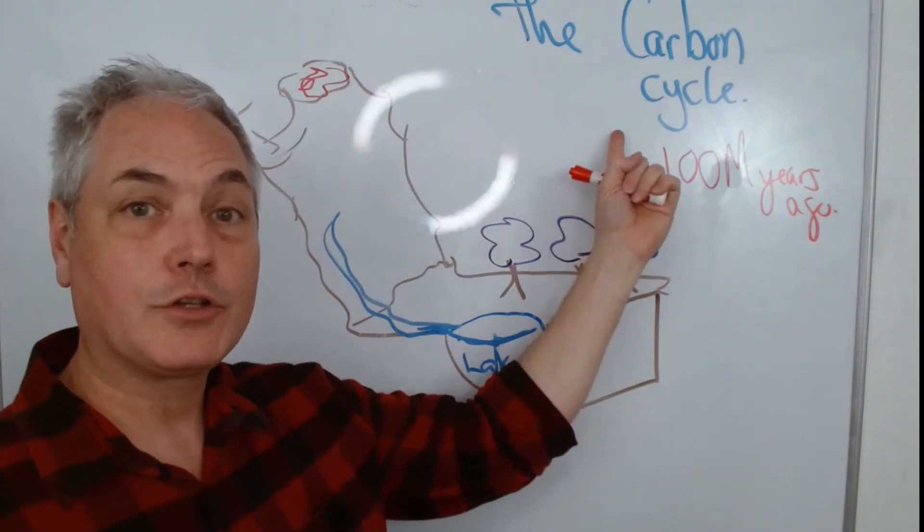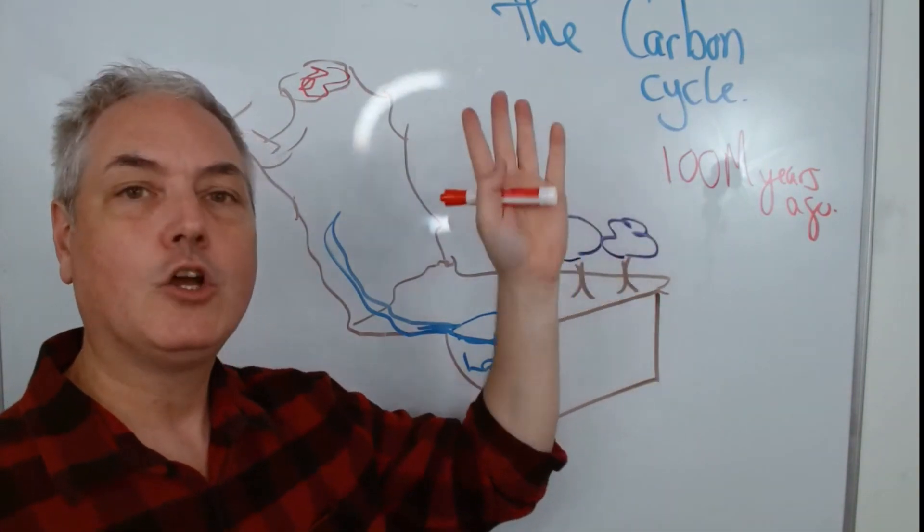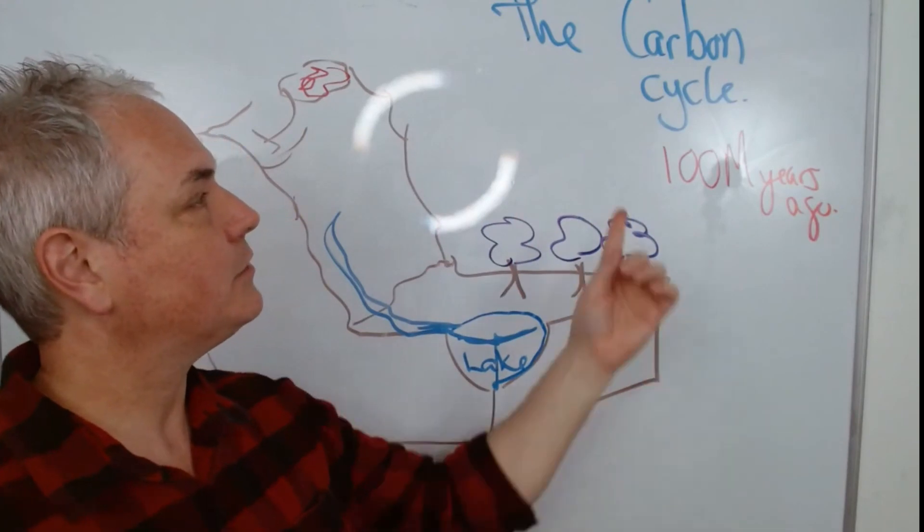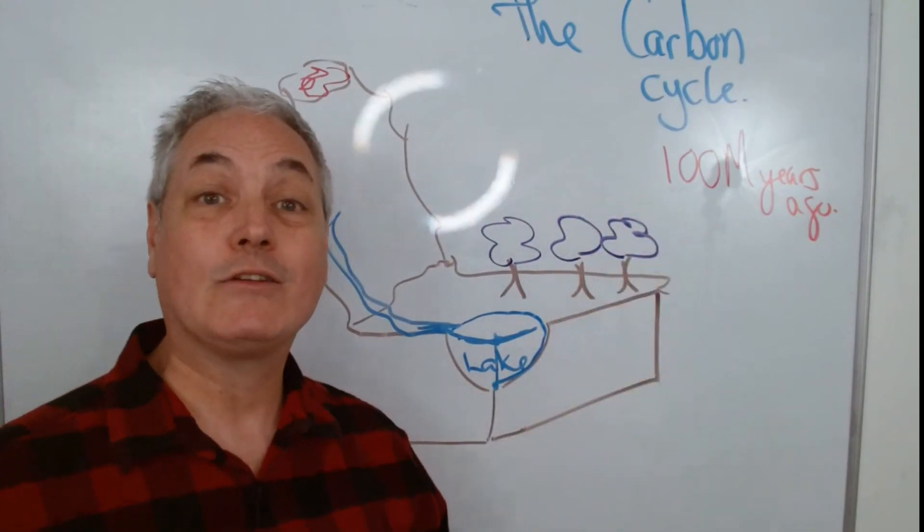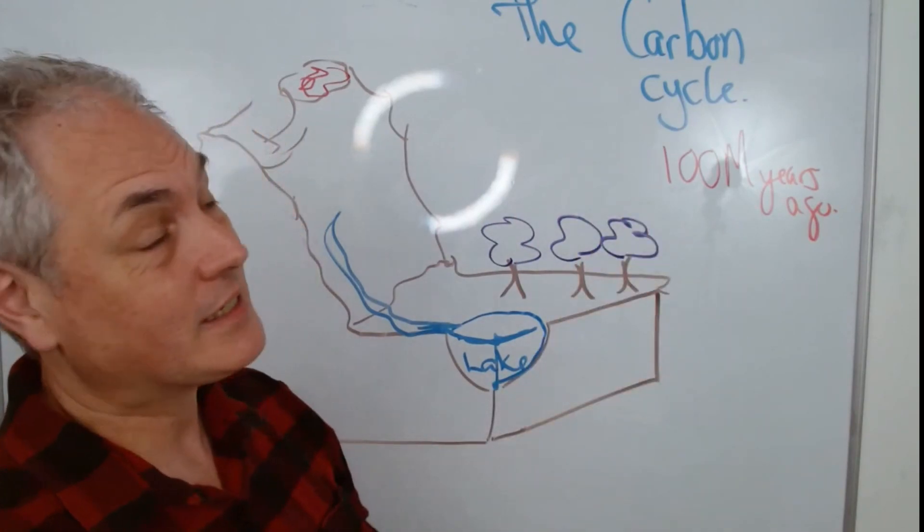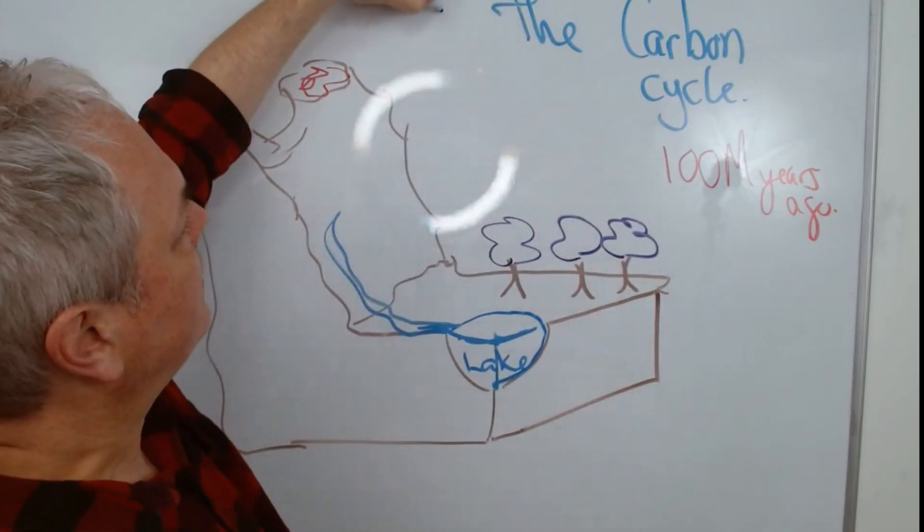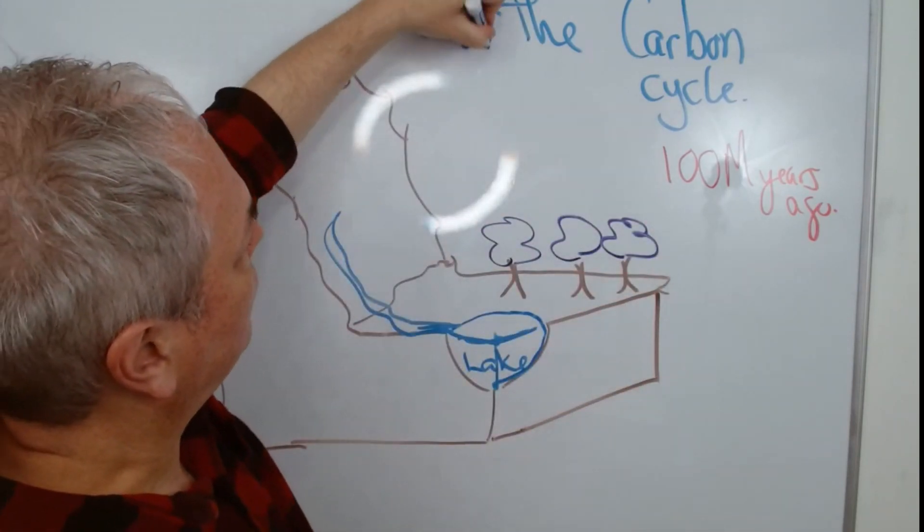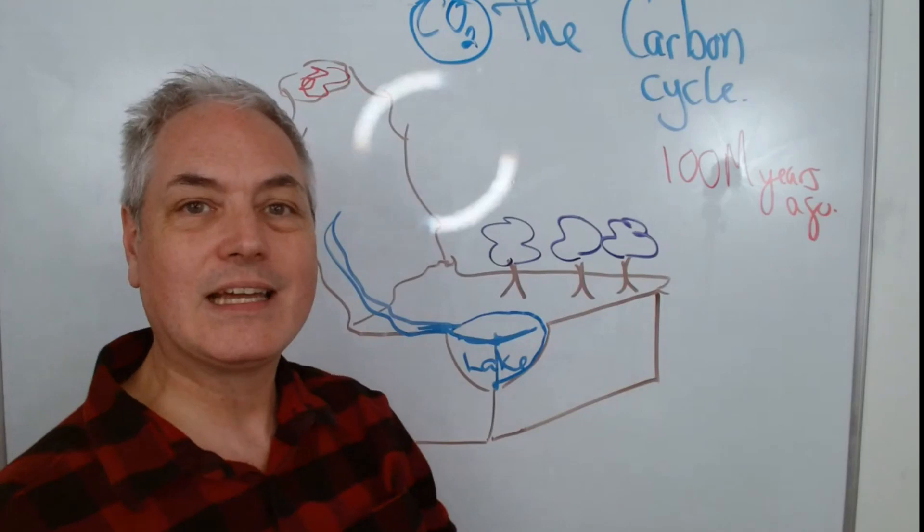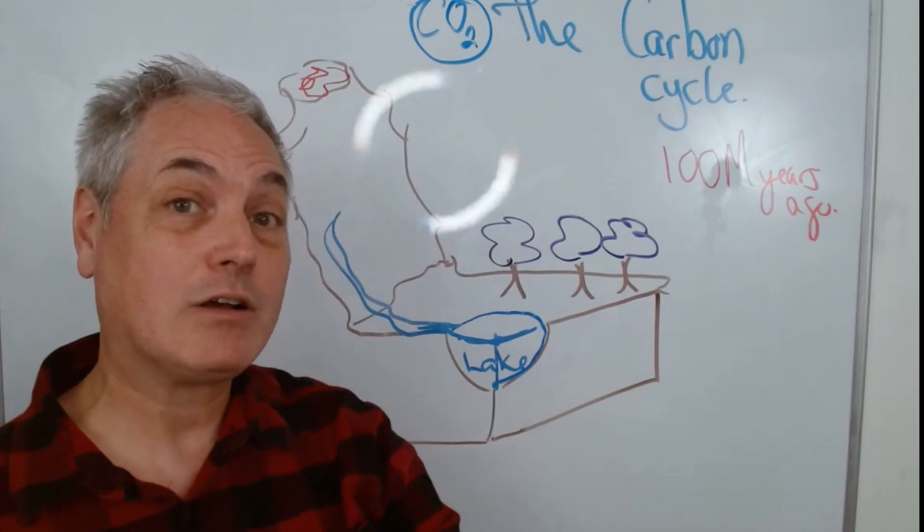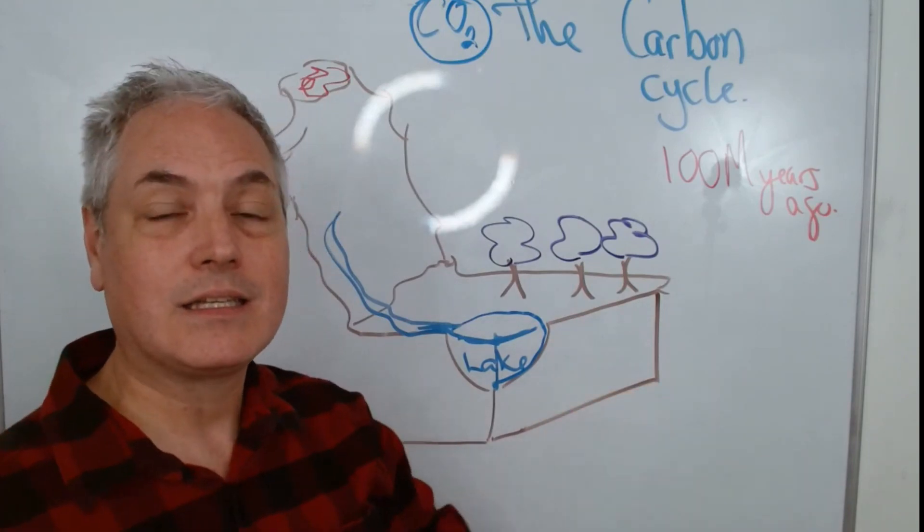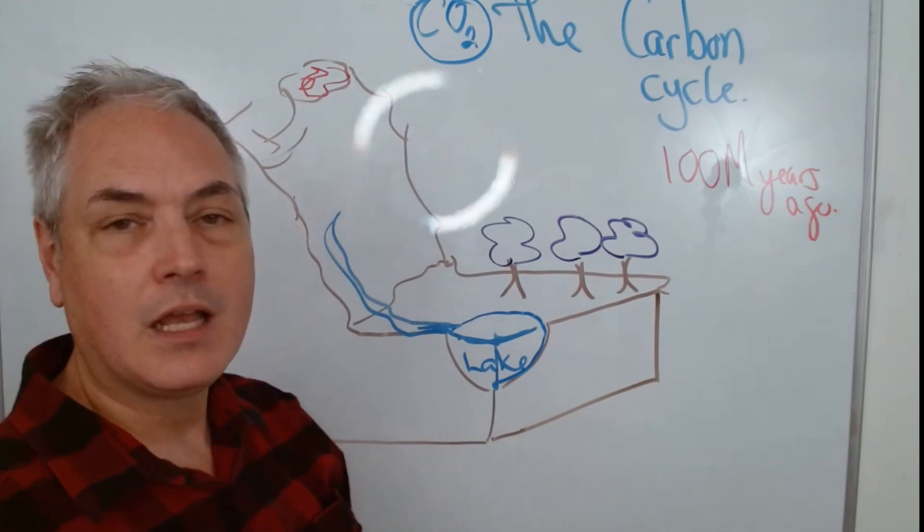Today we're going to spend some time to better understand the carbon cycle. Too often in society we talk about CO2, we're producing too much carbon dioxide, it's an issue. So today we'll talk about carbon dioxide, where it's from, and how we can see some imbalance in our environment.